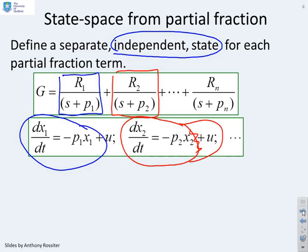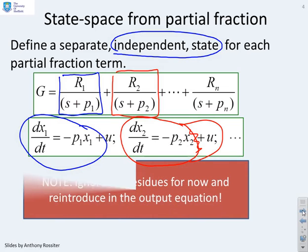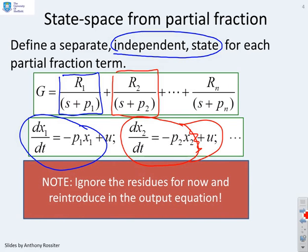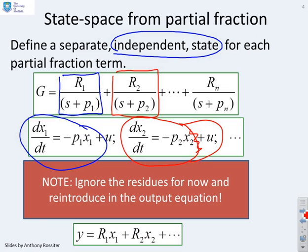But you'll also see I've ignored the Rs. So I've ignored the residues for now, and what I'm going to do is reintroduce those in the output equation. The output can be defined as R1 x1 plus R2 x2 and so on. So if I want to do a state space from a partial fraction, I first take each partial fraction and write the corresponding differential equation without the residue, and then the residue is reintroduced in the output equation.